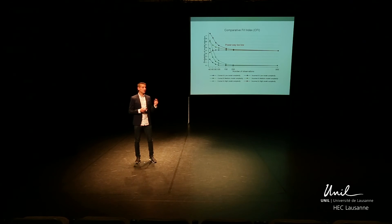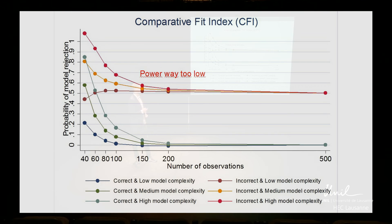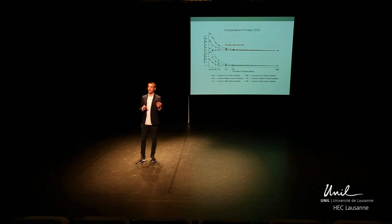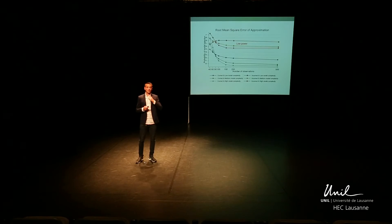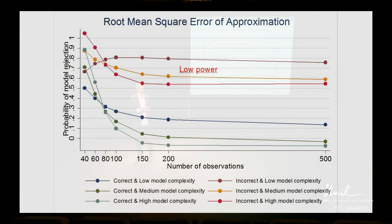Goodness-of-fit indexes are even more limited. The CFI has a type 1 error that is way too high at small sample sizes and when models are complex, and the CFI also lacks power to detect incorrect models, even at large sample sizes. Another index, the root-mean-square error of approximation, is also very limited. Its type 1 error is way too high at small sample sizes and also when models are simple. Its power to reject incorrect models will also be very limited when models are complex.